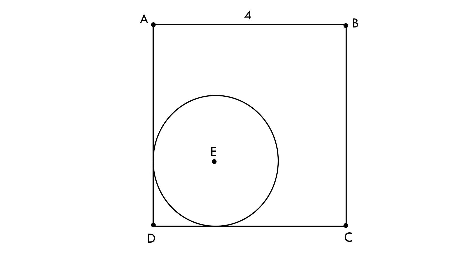Hi, we have a circle here with center E. A square ABCD with side 4 units has been drawn such that two sides of the square are tangent to the circle at point M and H.